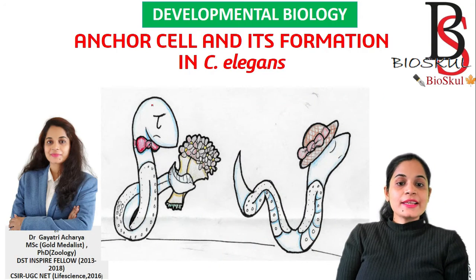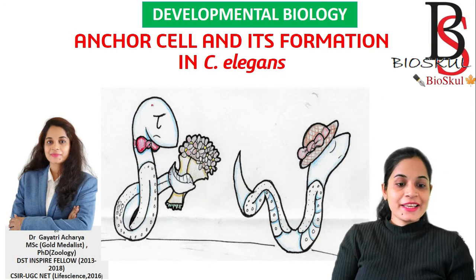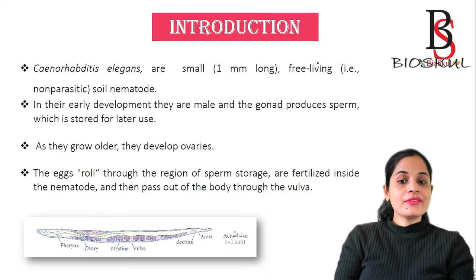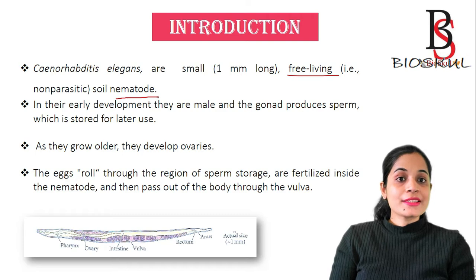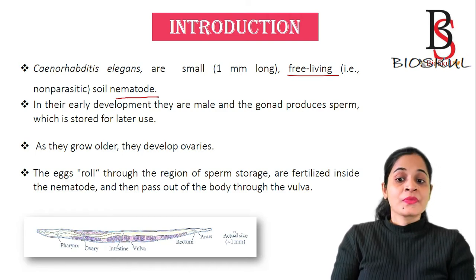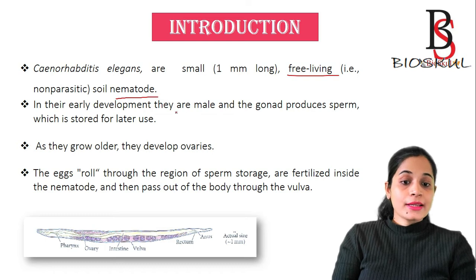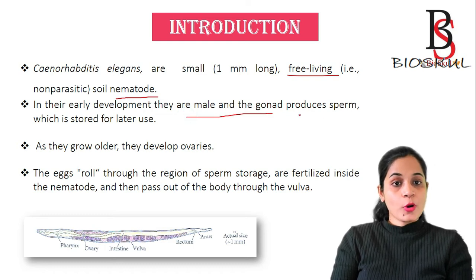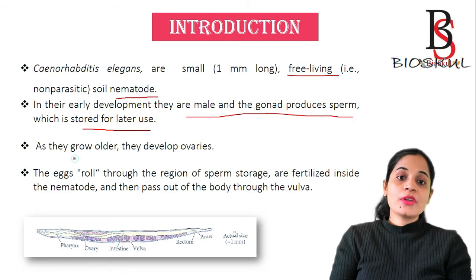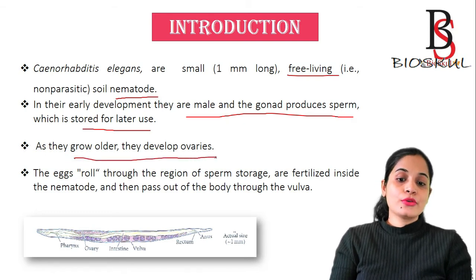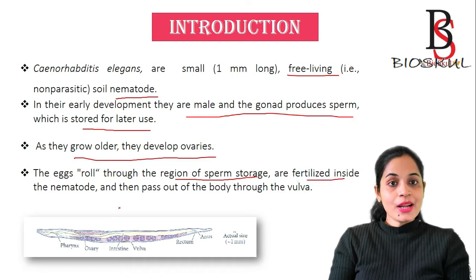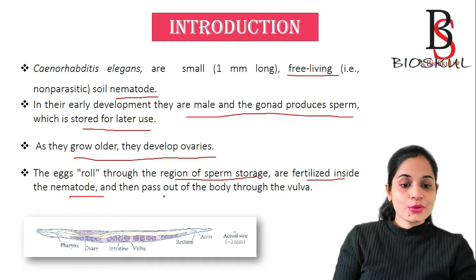Today we'll see the anchor cell and its formation in C. elegans. C. elegans are small free-living soil nematodes, commonly known as roundworms, and are an important model organism in developmental biology. In early development, the male gonad produces sperm which is stored in the spermatheca for later use. As they grow older, they develop ovaries, and eggs roll through the region of sperm storage, are fertilized inside the nematode, and passed out through the vulva.